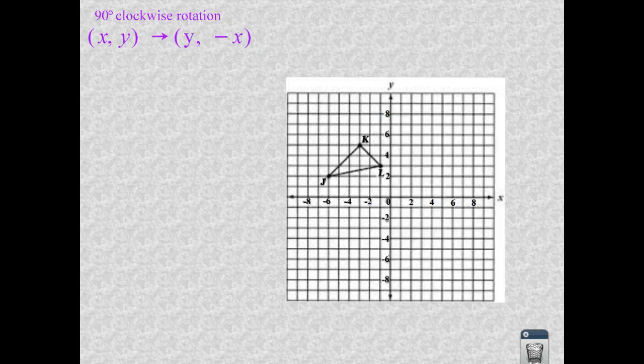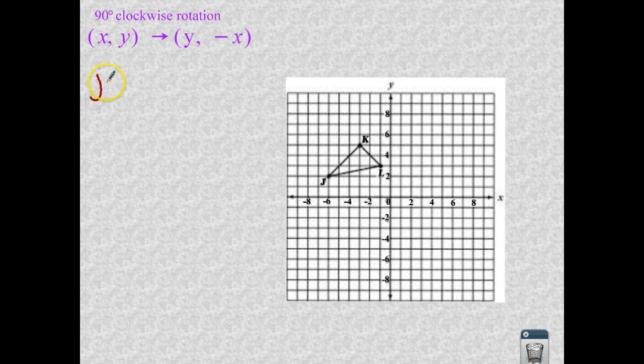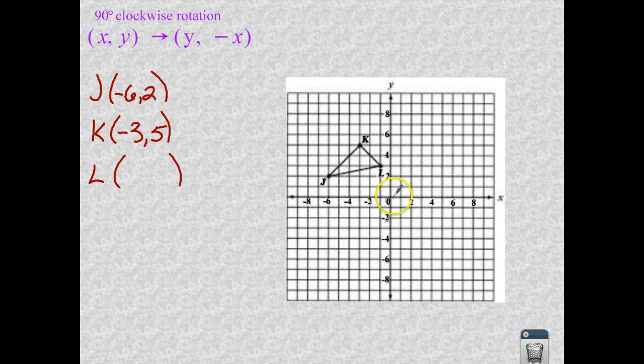So let's see what that looks like. Let's take our points J, K, and L. So we have J, K, and L. And write down their ordered pairs. So J is going to be, we have negative 6, positive 2. K is, we have negative 3, positive 5. And then L is negative 1, positive 3.